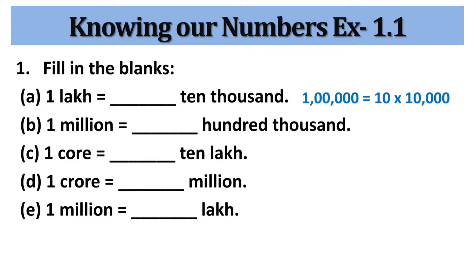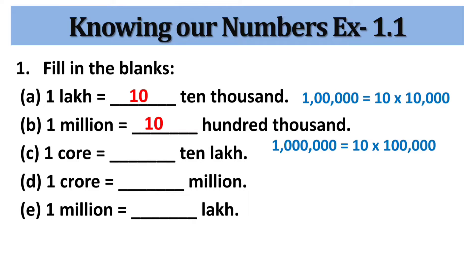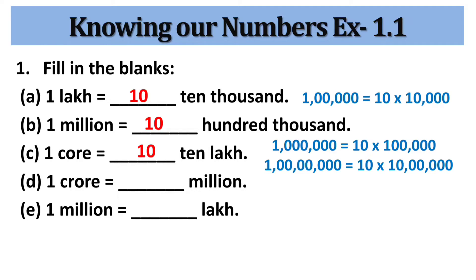As we know, 1 lakh equals 10 multiplied by 10,000, so 1 lakh equals 10 ten-thousands. 1 million equals 10 multiplied by 1,00,000, so 1 million equals 10 one-hundred-thousands. 1 crore equals 10 multiplied by 10 lakh, hence 1 crore equals 10 ten-lakhs.